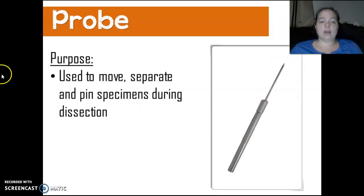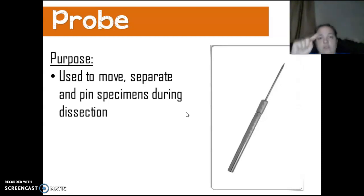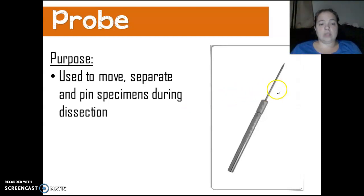A probe. A dissecting probe. These are used to move and separate pin specimens during dissection. So you use it to move stuff around instead of sticking your finger in there and moving stuff around with your finger. You use this. It keeps any possible evidence intact. So you're not pushing around and doing stuff you shouldn't.